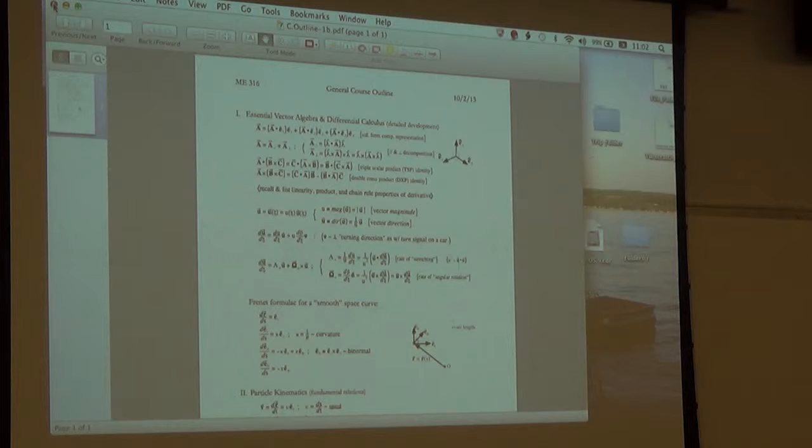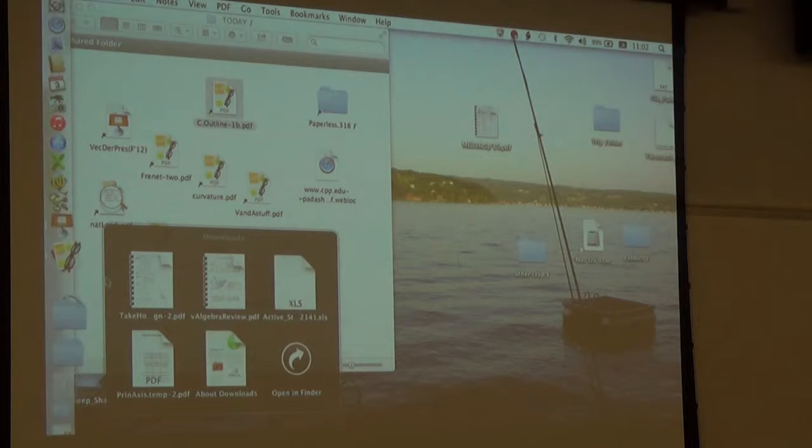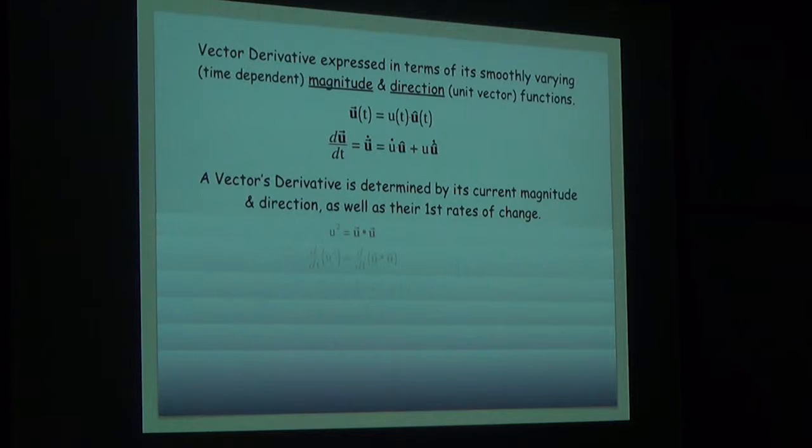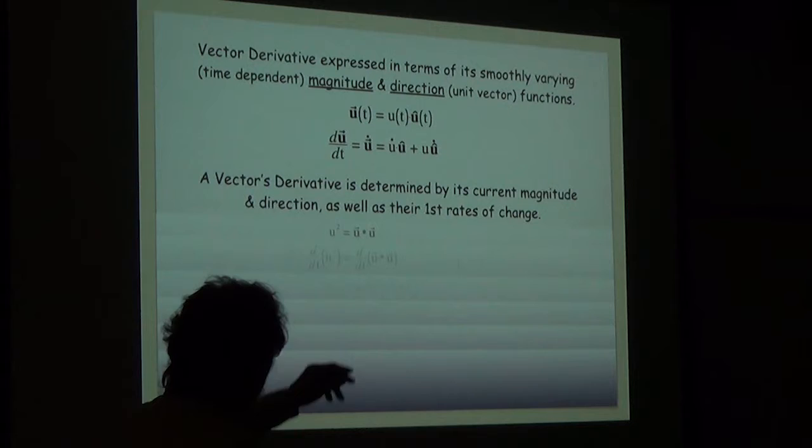We've got a little slideshow for you to try to enlighten you in that regard. In the presentation you're about to see, I decided to use time as the independent variable because it's probably easiest to think about things changing in time. And frankly, in dynamics, oftentimes we are dealing with vector functions changing in time.